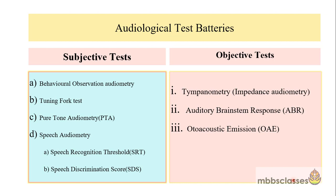PTA belongs to the subjective test. The audiological test batteries are divided into subjective and objective. Among the subjective tests are behavioral observation audiometry, tuning fork test, pure tone audiometry, and speech audiometry. The objective tests of hearing are tympanometry, auditory brainstem response or ABR, and otoacoustic emissions.